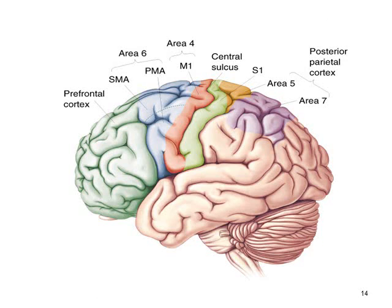Looking at all the brain areas relating to movement: we have the prefrontal cortex, and area 6, which consists of the premotor area and supplementary motor area involved in planning. M1 is the primary motor cortex shown in pink, with the central sulcus in the middle and the somatosensory cortex shown in green. We also have areas 5 and 7 in the posterior parietal cortex.